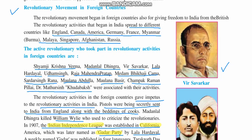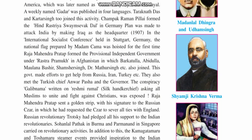A weekly newspaper named Gadar was published in four languages. Taraknath Das and Kartar Singh also joined these activities. Champakraman Pillai formed a group named Hindusthan Swayam Sevak Dal in Germany. This group — Dal meaning group — was formed in Germany as well, and a plan was made to attack India by making Iraq the headquarters.